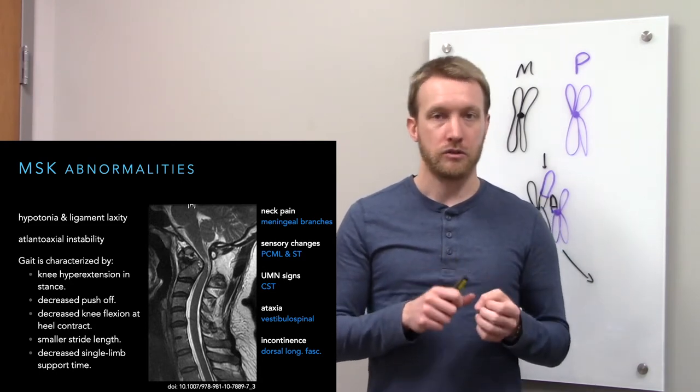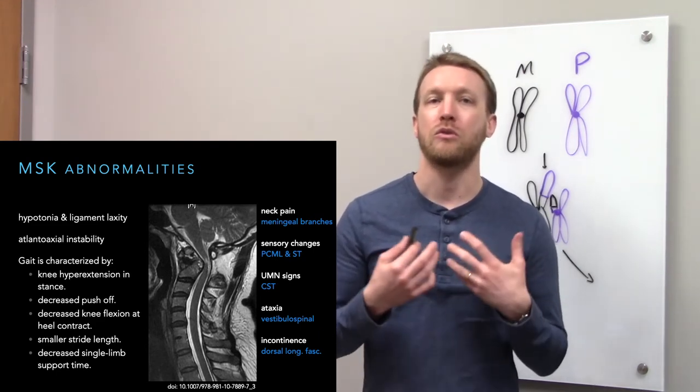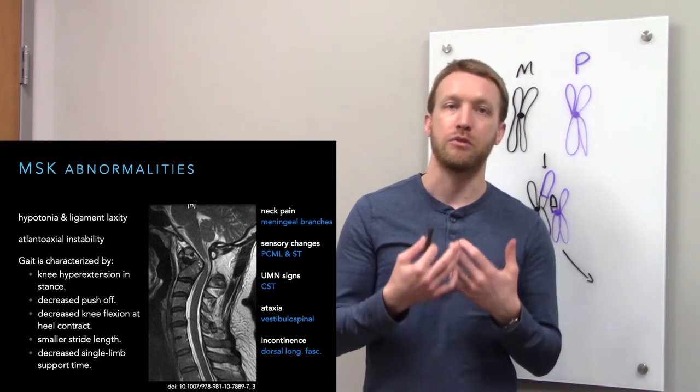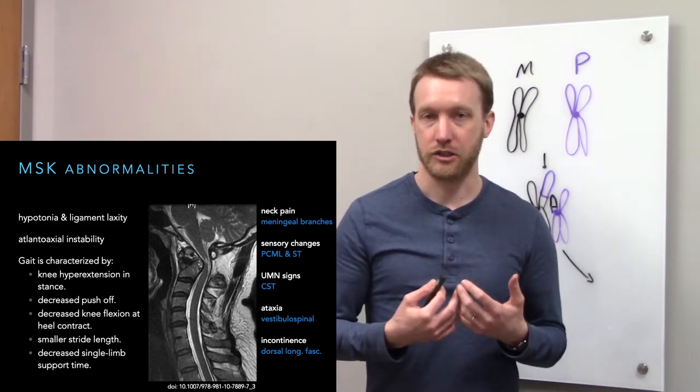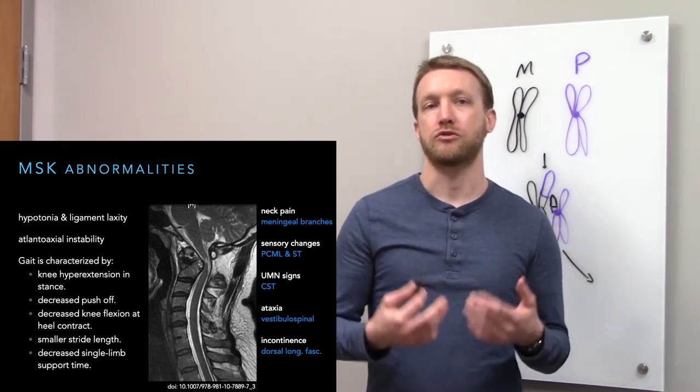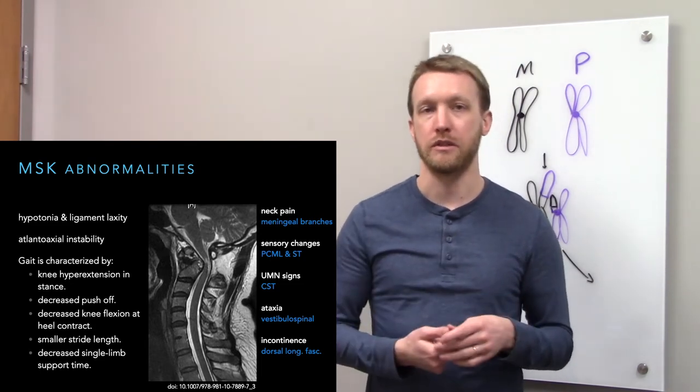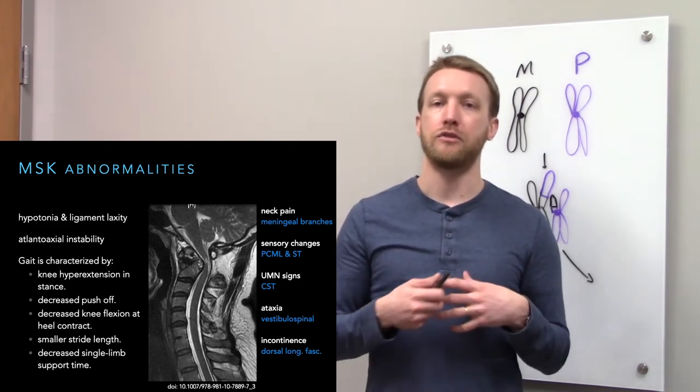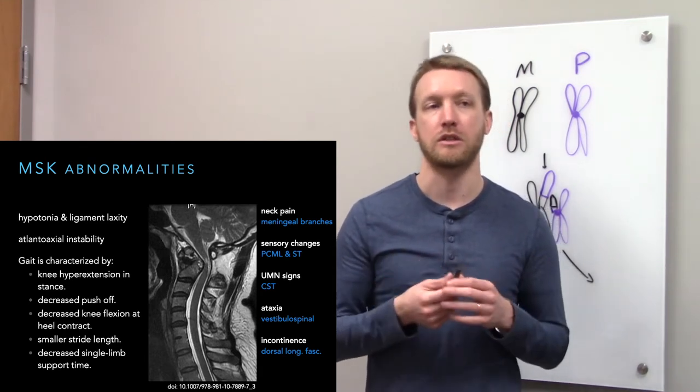That weakness also creates abnormalities in the gait. We're seeing a kind of small, weak gait with decreased push-off, decreased knee flexion at the heel contact. These result in a smaller stride length. The strides will be quicker because of decreased single limb support time. All of these have to do with weakness of the muscle and decrease in muscle tone.